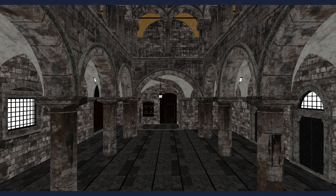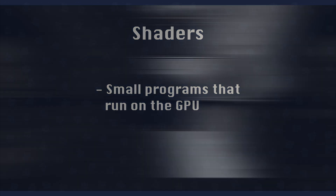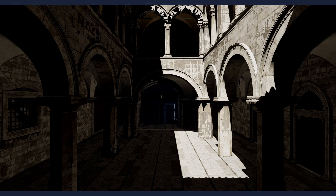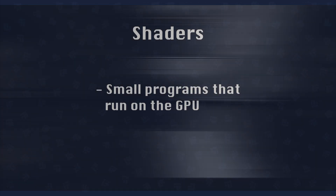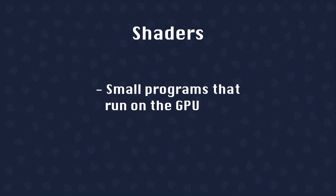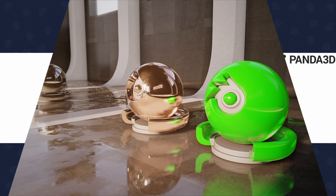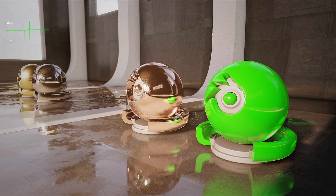But Panda3D has a powerful trick up its sleeve: shaders. Shaders are small programs that run directly on your computer's graphics card. They can simulate lighting, shadows, reflections, refractions — pretty much everything that makes computer graphics look convincing and beautiful. You could write your own shaders from scratch, and if you dive deep into Panda3D, you'll find tons of resources teaching you how to do exactly that. But for now, writing shaders manually is overkill. Instead, we're going to use a pre-built solution called Render Pipeline. Render Pipeline is an advanced graphics framework built on top of Panda3D, and it gives you realistic graphics with minimal setup.